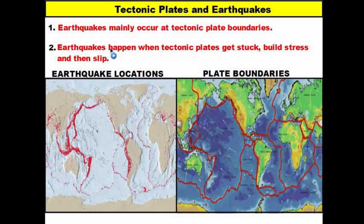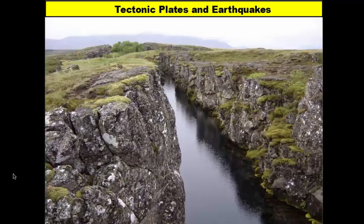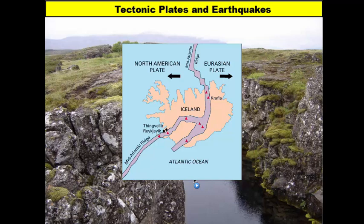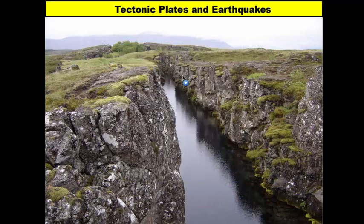Let's take a look at why this happens. In this picture we have a divergent boundary — a rift valley you can see in Iceland. Iceland is actually a volcanic island that formed on the mid-Atlantic ridge, which, as we learned in sea floor spreading, is where two tectonic plates move away from one another. You can actually be on two different plates on the same day just by crossing this little opening.